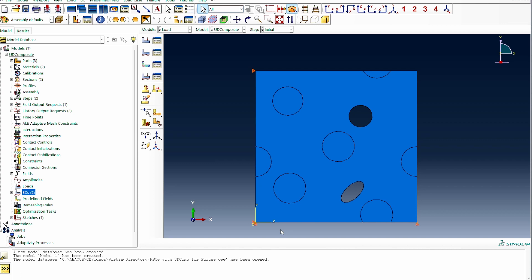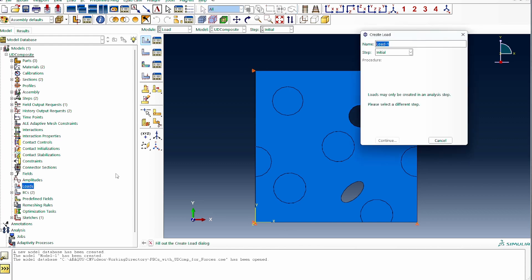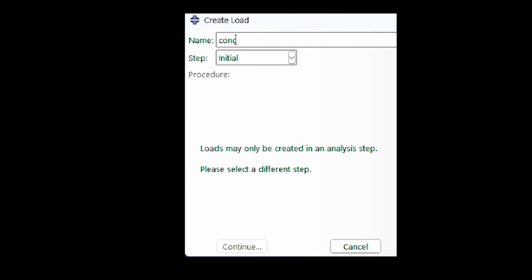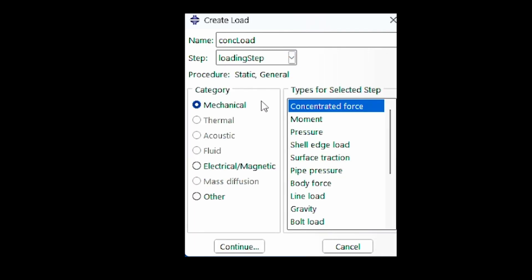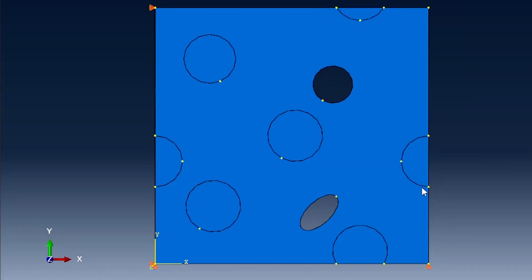I'll do the same thing for the Y base roller. I select that point, press down shift, select the second point, and constrain it in the two direction. We've constrained the model in the way it should be so that we have a quarter of a quadrant displacement. Now this is where our concentrated force comes in. This particular student is interested in investigating creep, which requires you to apply a force load instead of a displacement load.